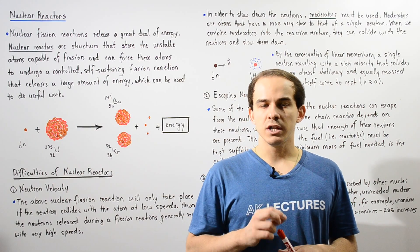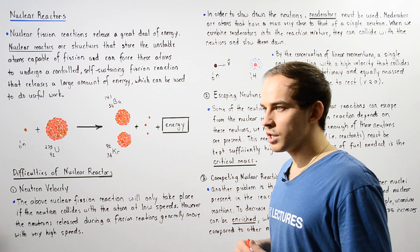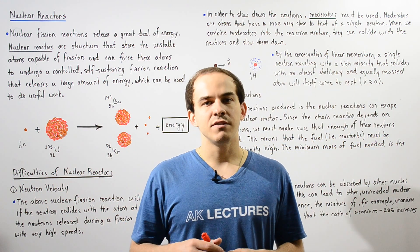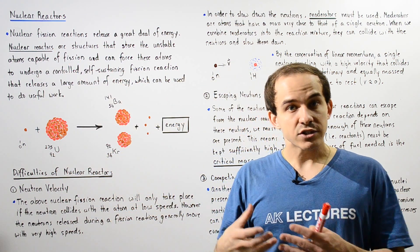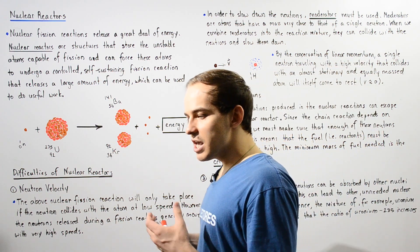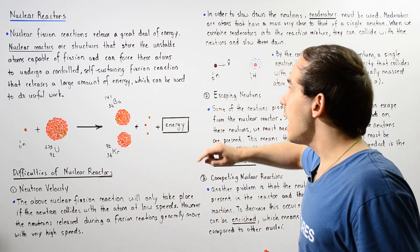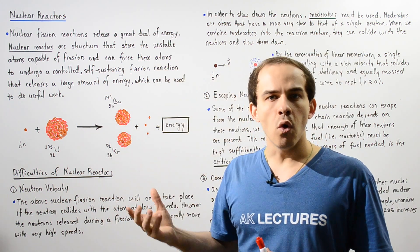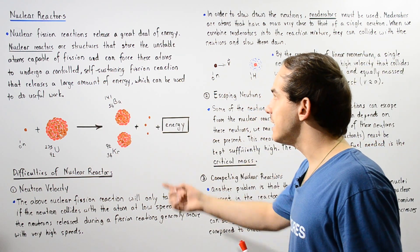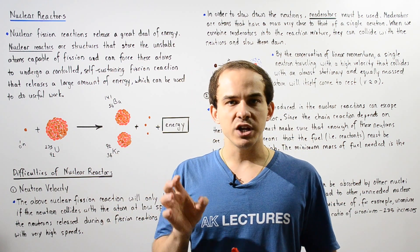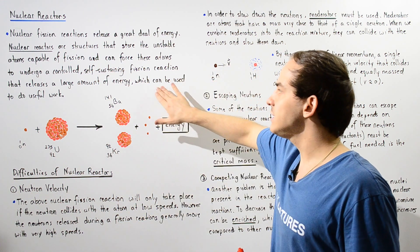In our discussion on nuclear fission, we basically said that nuclear fission is a type of nuclear reaction that releases a lot of energy. A nuclear reactor is basically a structure that stores these unstable atoms that are capable of undergoing nuclear fission reactions. These reactors can basically force these atoms to undergo a controlled, self-sustaining fission reaction known as the chain reaction, which releases a great amount of energy that can be used to do useful work.